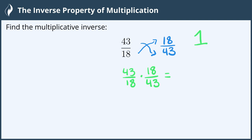Here we can simplify. 43 divided by 43 is 1. 18 divided by 18 is also 1. 1 times 1 is what we have left on the numerator. And on the denominator, we also have 1 times 1. 1 divided by 1 is 1.